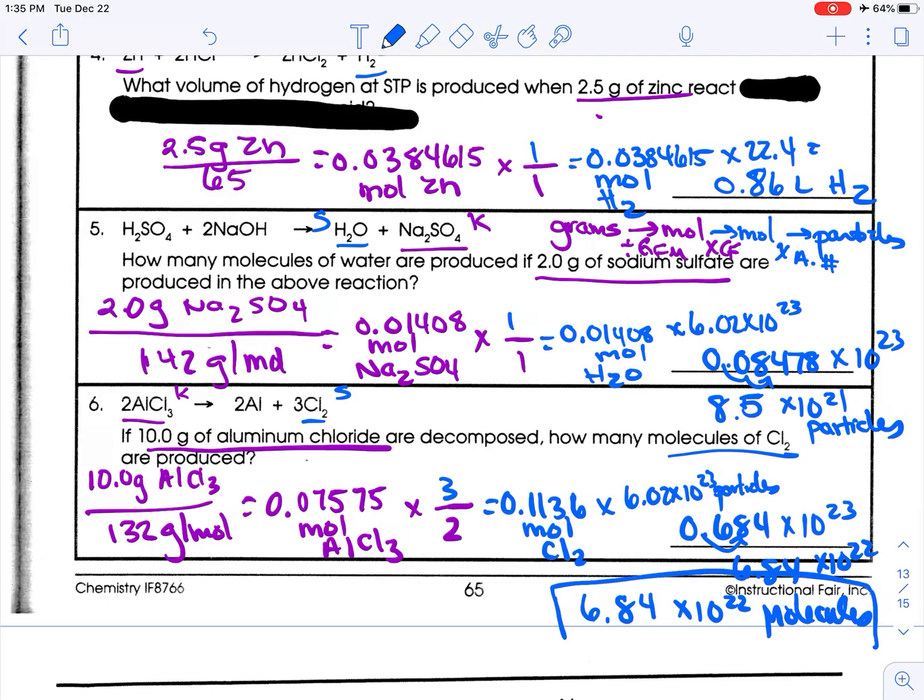I thought they asked for atoms. And so just for kicks, if you have 6.84 times 10 to the 22nd molecules, and they ask you for atoms, when one molecule, you have two atoms, so you just multiply it by two. But I was wrong, they did not ask for that, so don't worry about that. Okay, now, like I said, I didn't have an answer key. So if I made any mistakes, let me know.